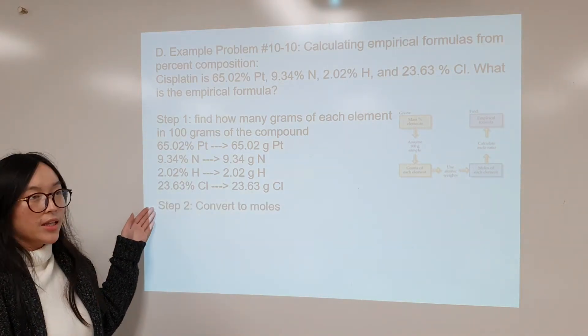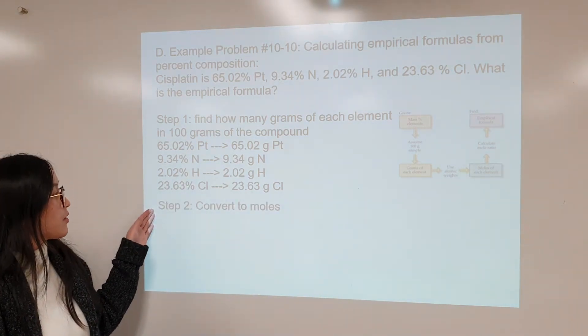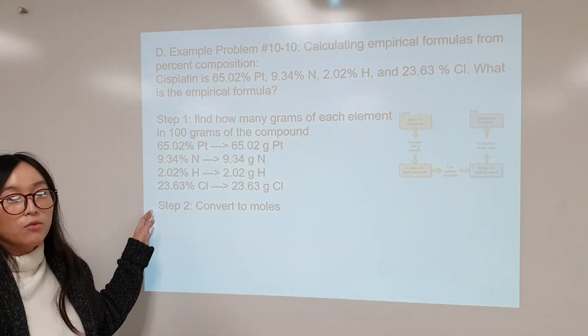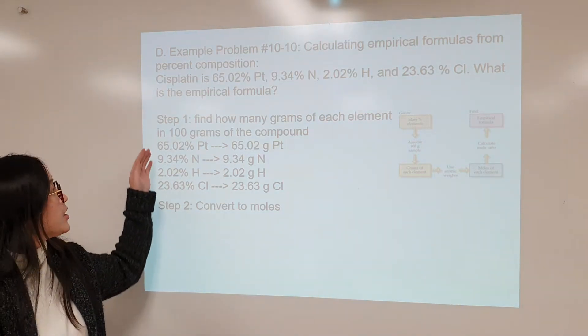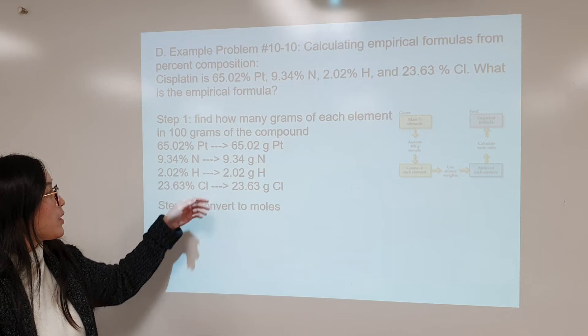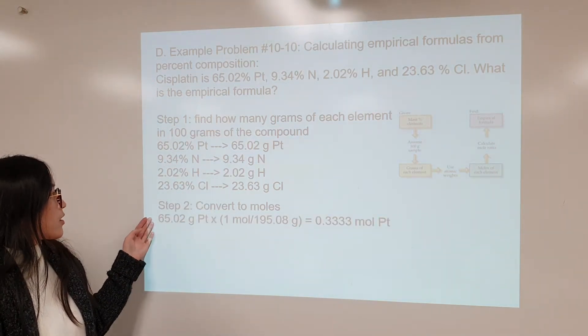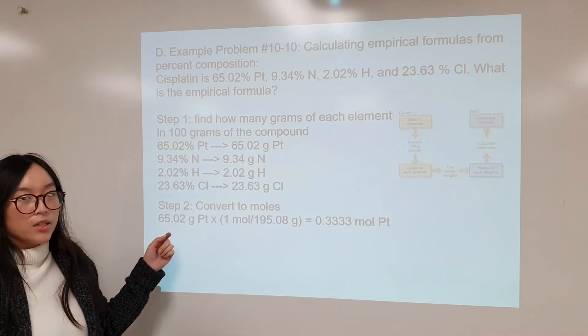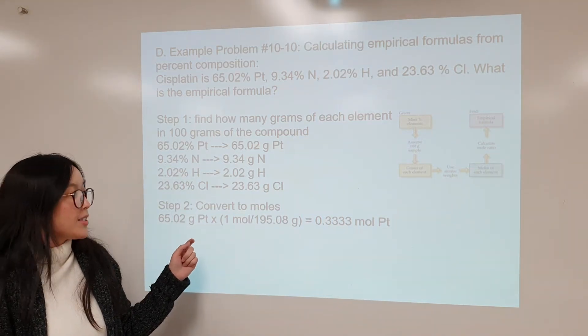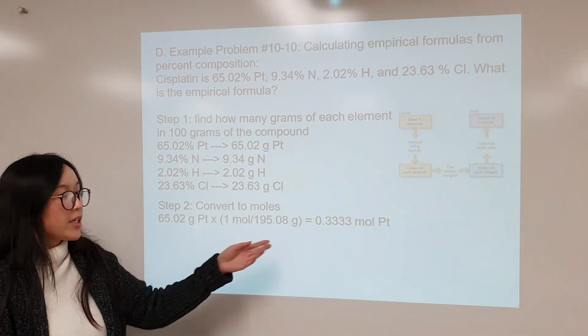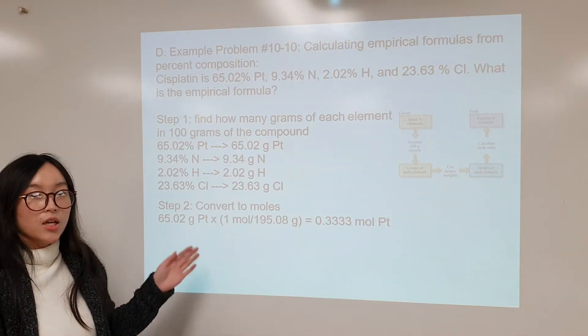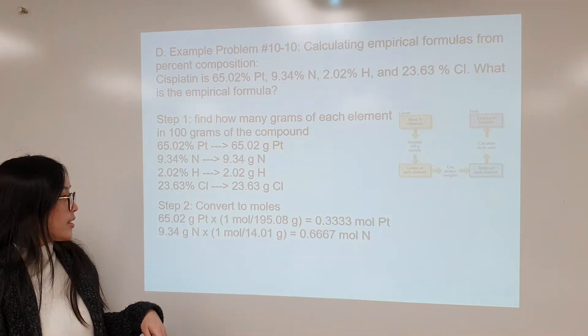And so again, we'll go to step two of converting, of getting to our empirical formula. That's where we convert all these grams that we have now to moles. So to do that, we'll take our grams, and we want to convert it, multiply it by the molar mass of platinum, and we'll get the moles. And we do that for each element, and we'll get these values.